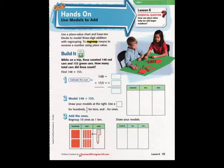Today, boys and girls, we are going to use models to learn addition with regrouping. We are going to look at this little area right here. Follow along with me. Use a place value chart and base 10 blocks to model 3-digit addition with regrouping. To regroup means to rename a number using place value.